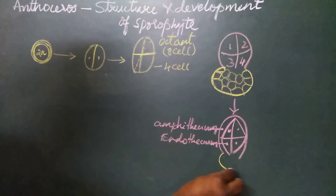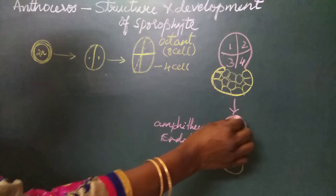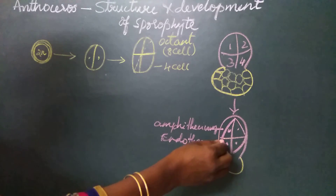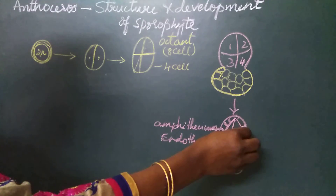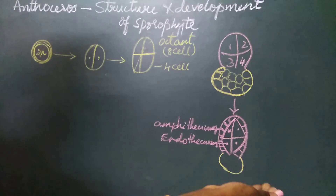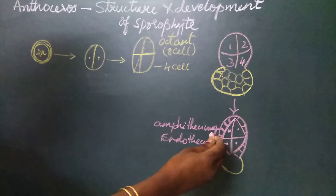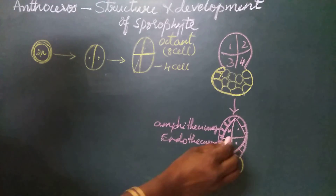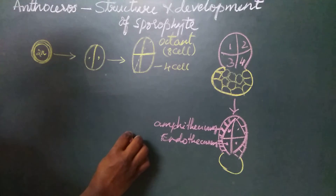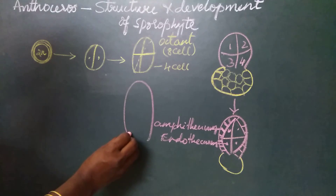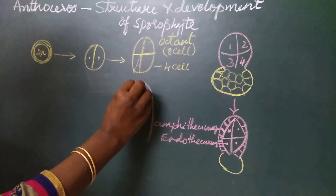The amphithesium results in the formation of the wall. All eight cells of the amphithesium start dividing; they divide anticlinally. The first division was periclinal so that an outer layer and an inner mass of cells is formed. After formation of the amphithesium layer, the eight cells of the amphithesium divide anticlinally so that the size of the capsule increases and cells are added to the capsule of Anthoceros.